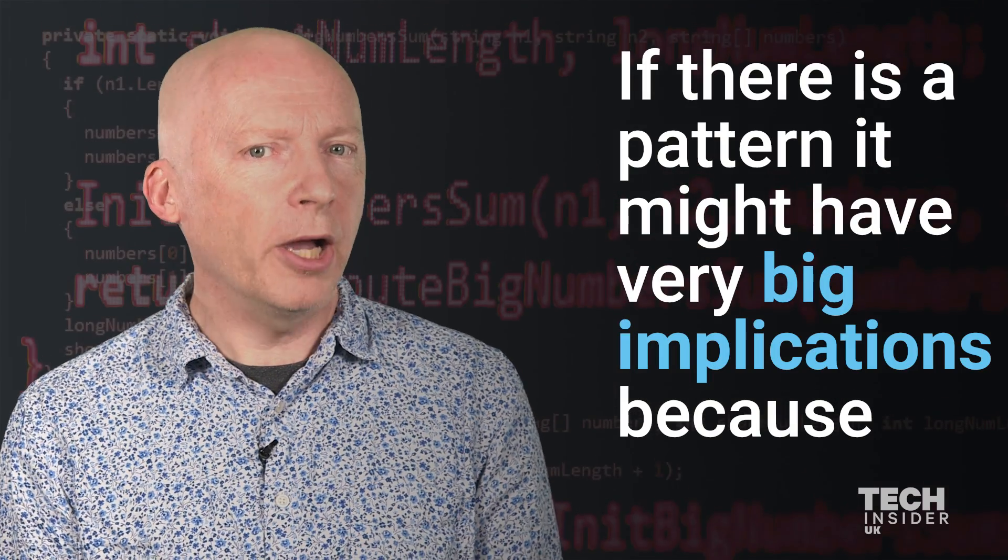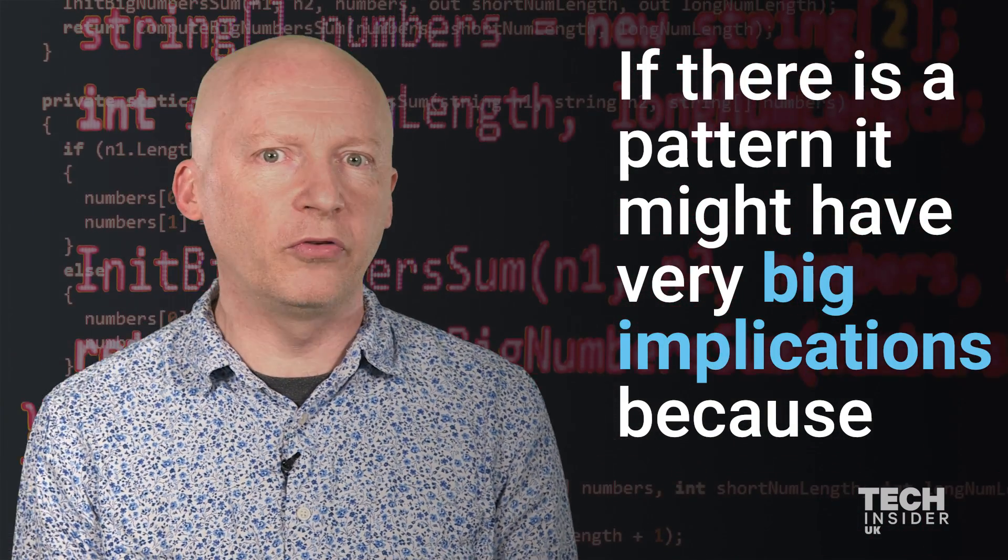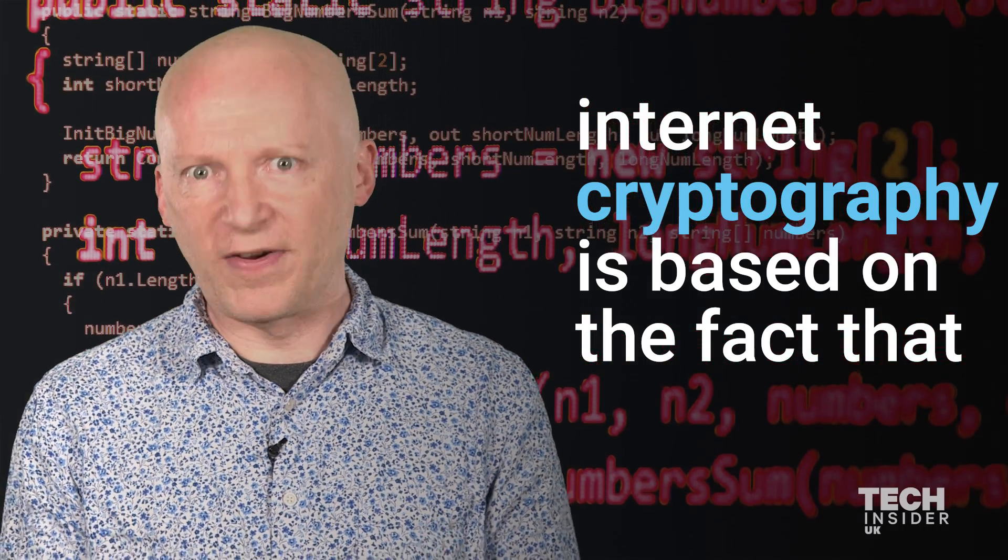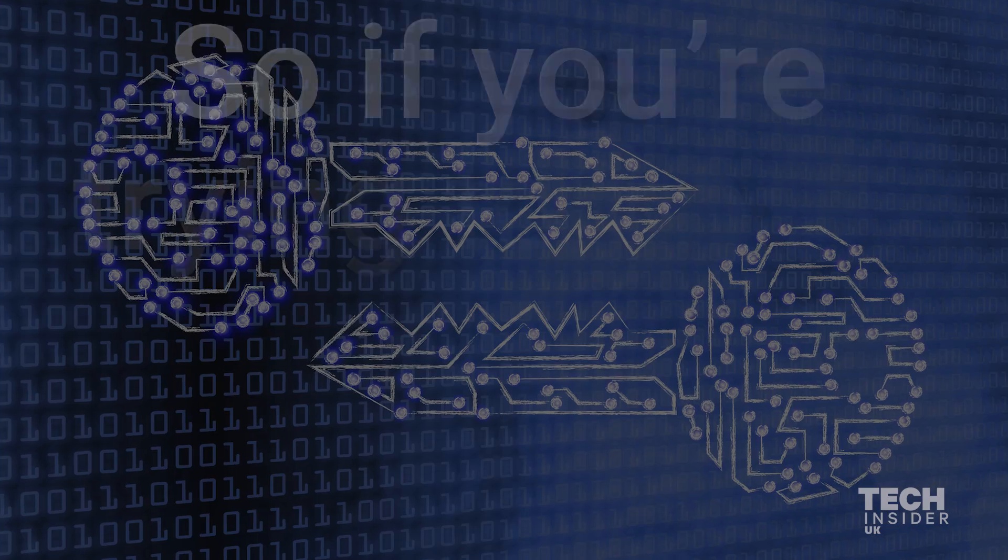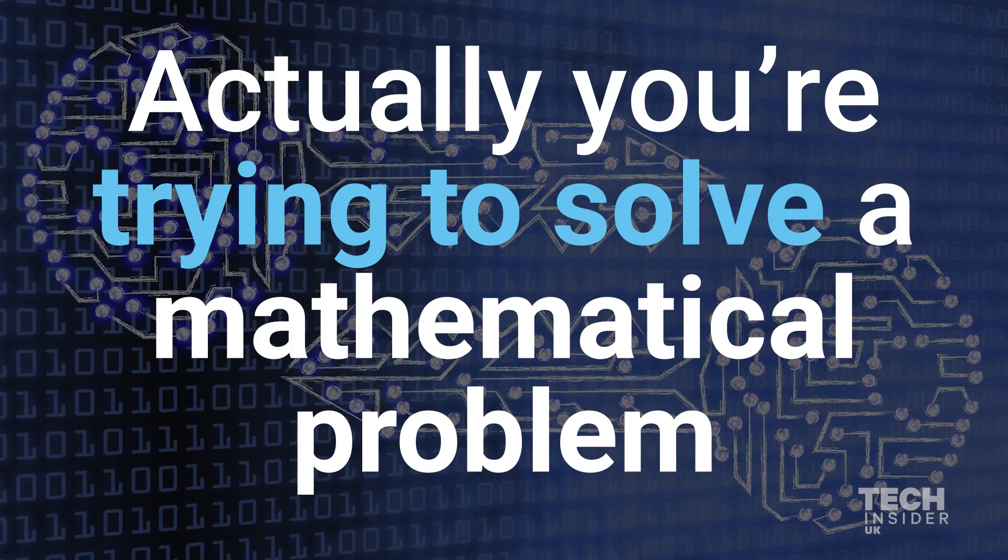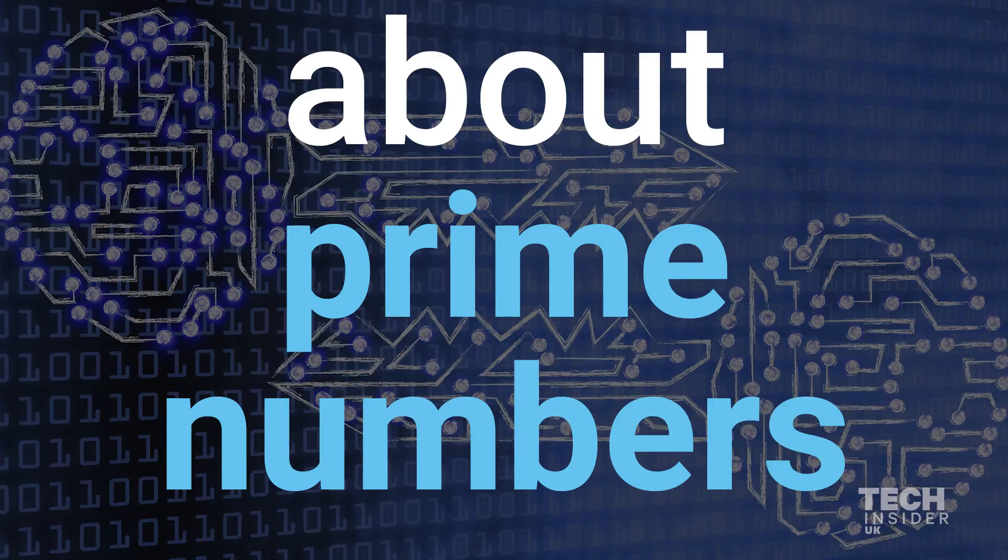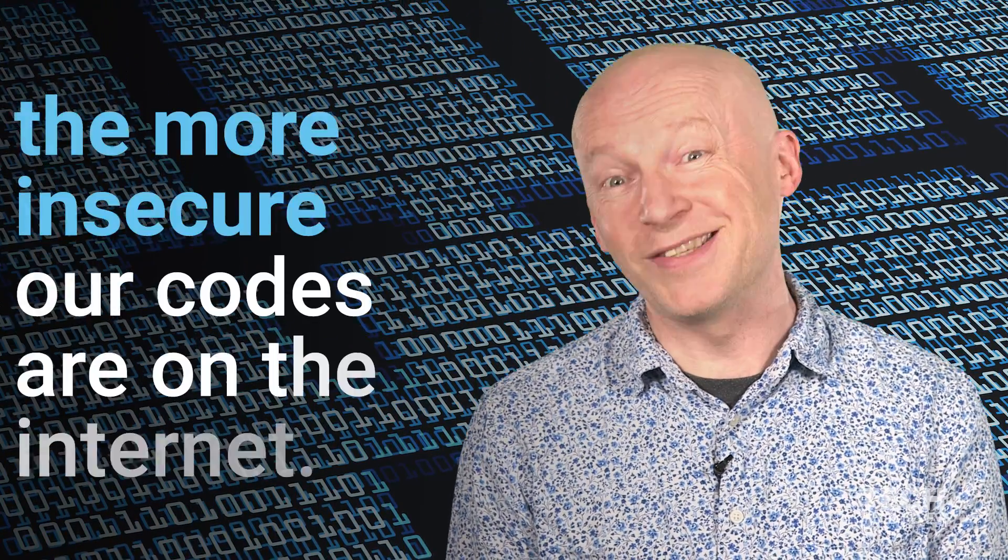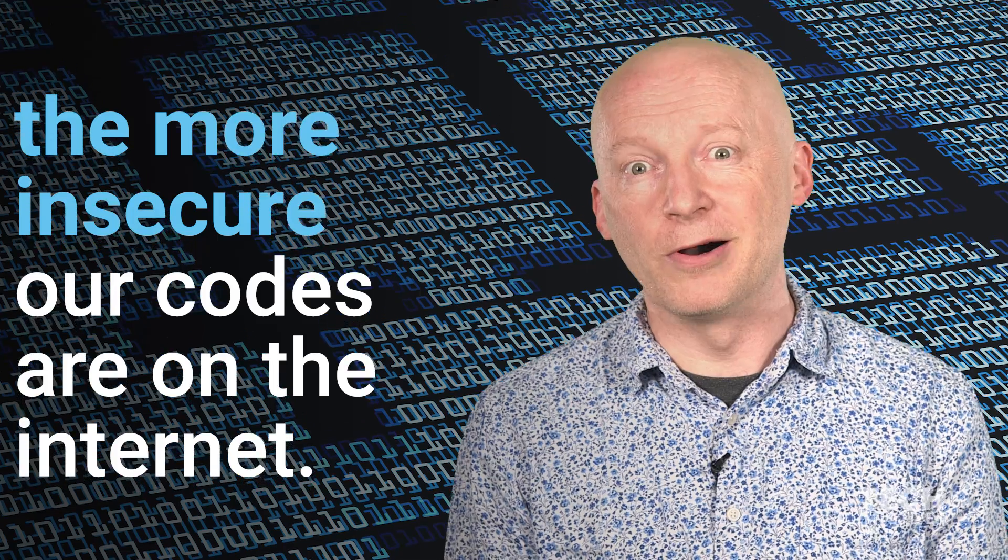If there is a pattern it might have very big implications because internet cryptography is based on the fact that we don't understand prime numbers. So if you're trying to crack a code on the internet, you're trying to solve a mathematical problem about prime numbers. The more we understand about primes, the more insecure our codes are on the internet.